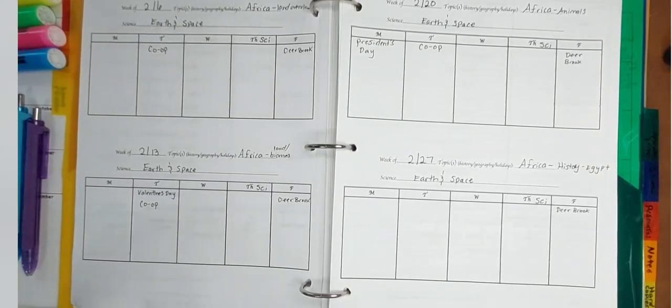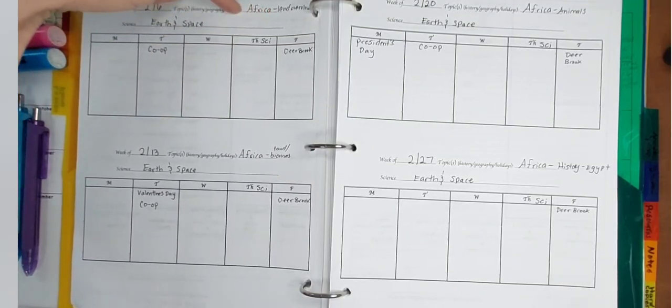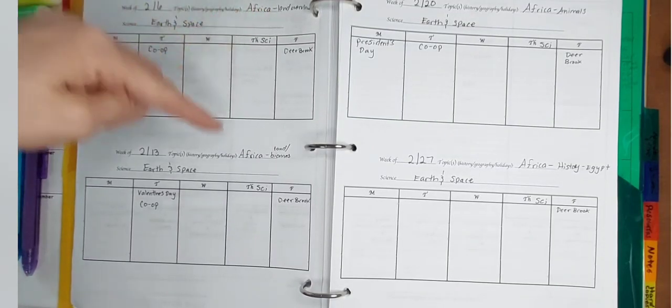Okay, this is how I set it up. I go out and put the date for each week. I went ahead and put the topic for history, geography or holidays, which is Africa. The first week, the land and overview.